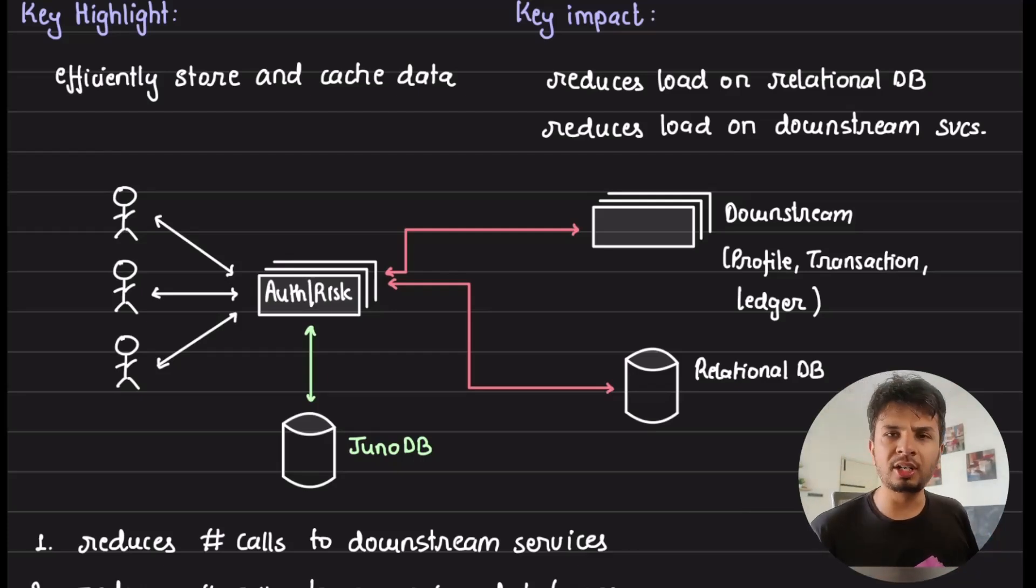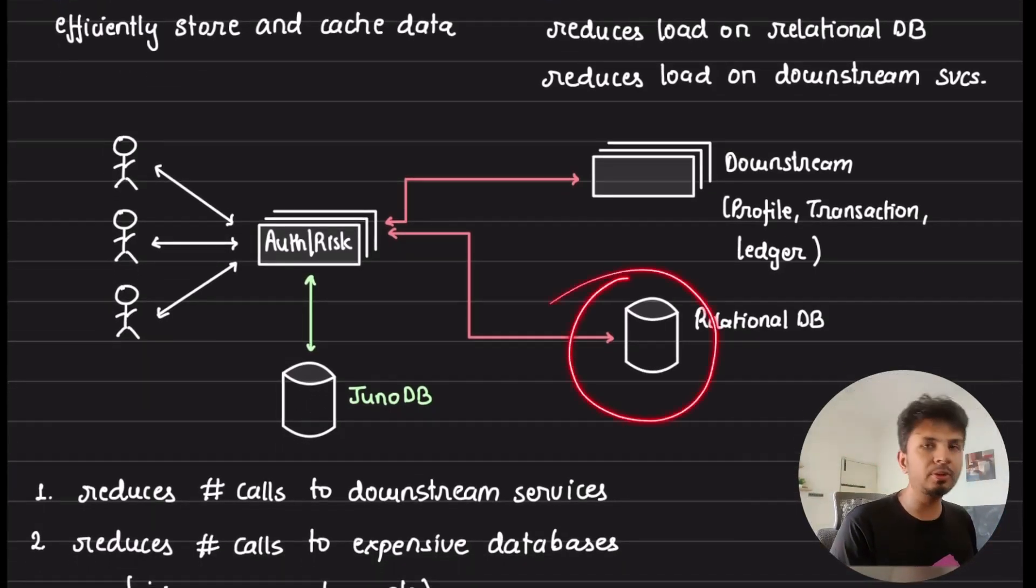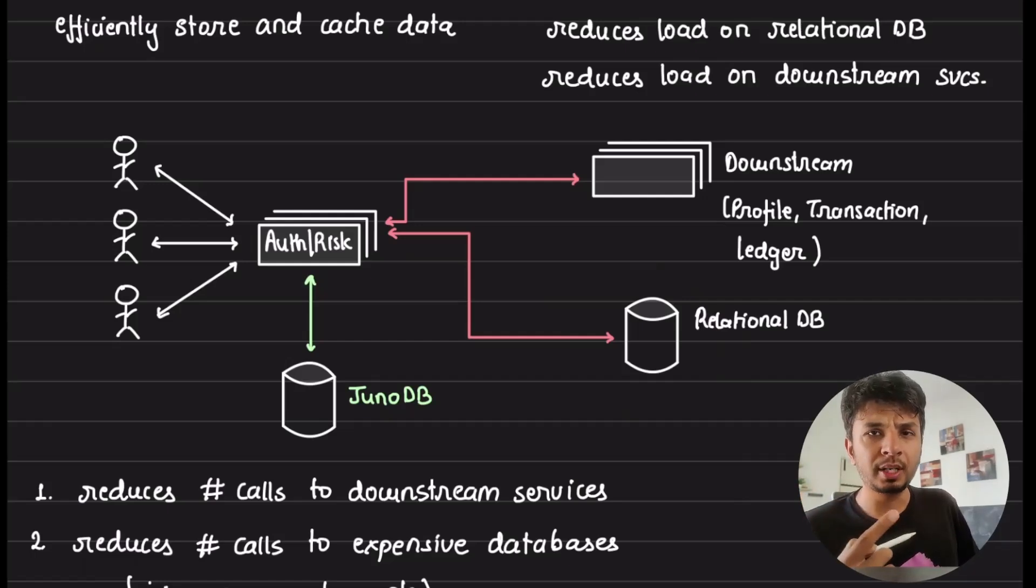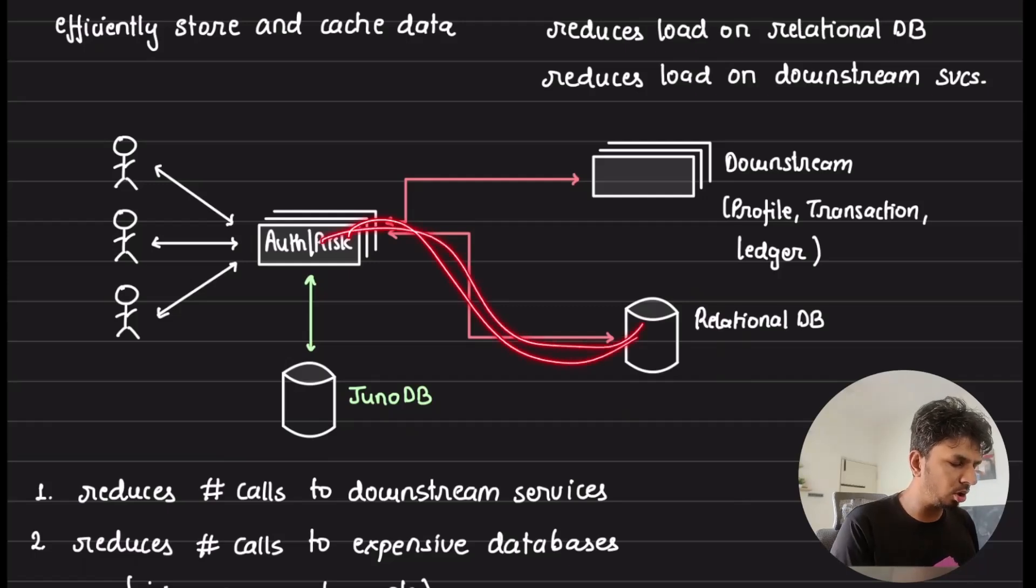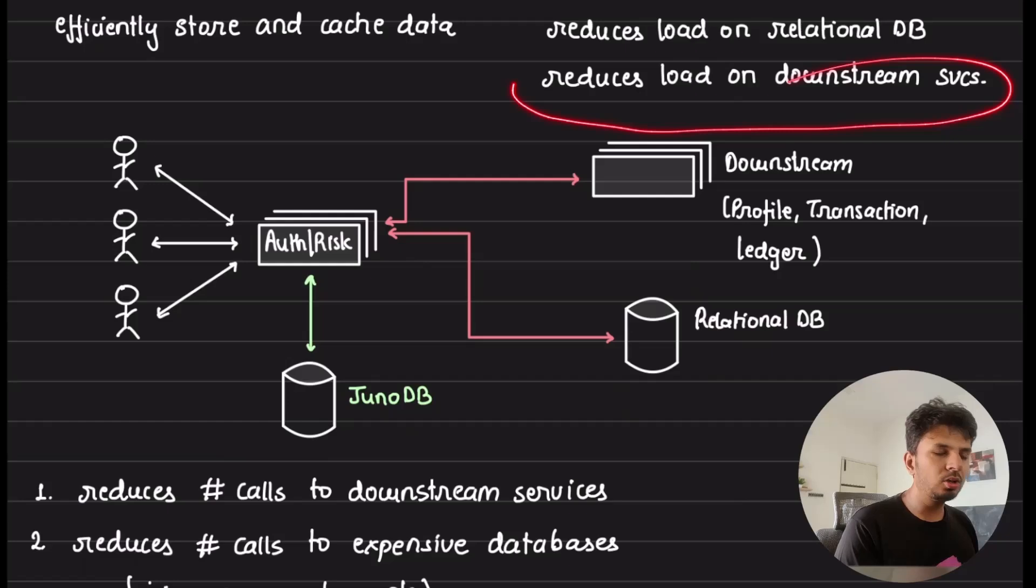The key impact that JunoDB has brought in for PayPal is that it reduces the load on relational databases. Most payment platforms use relational databases primarily because of its ACID guarantees and because that being the source of truth for most payment platforms out there. We know how expensive SQL queries can get when you are joining large number of tables or when you are running a complex aggregation. So by using a cache, it's a very common way, you are reducing the load on relational database. For example, if you've already computed an expensive query, why would you want to recompute it by firing them on relational database again?